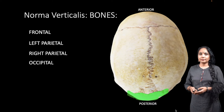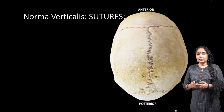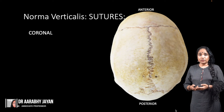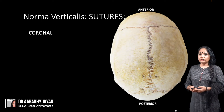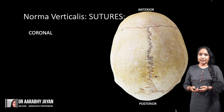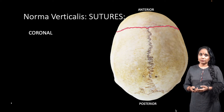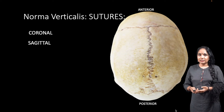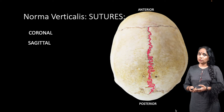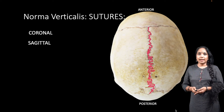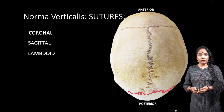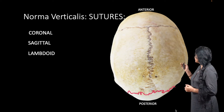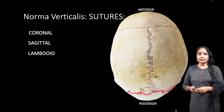Now let's look at the sutures of the norma verticalis. The first is the coronal suture, between the frontal bone in front and the two parietal bones behind. The next is the sagittal suture, between the two parietal bones. The last is the lambdoid suture, between the two parietal bones and the occipital bone.